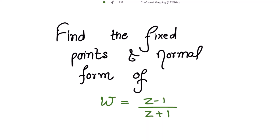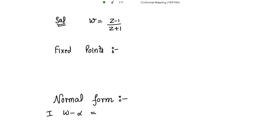To find the fixed points of the transformation w equal to z minus 1 over z plus 1. To find the fixed points, we have to put w equal to z. So we get z is equal to z minus 1 over z plus 1. Cross multiplying,